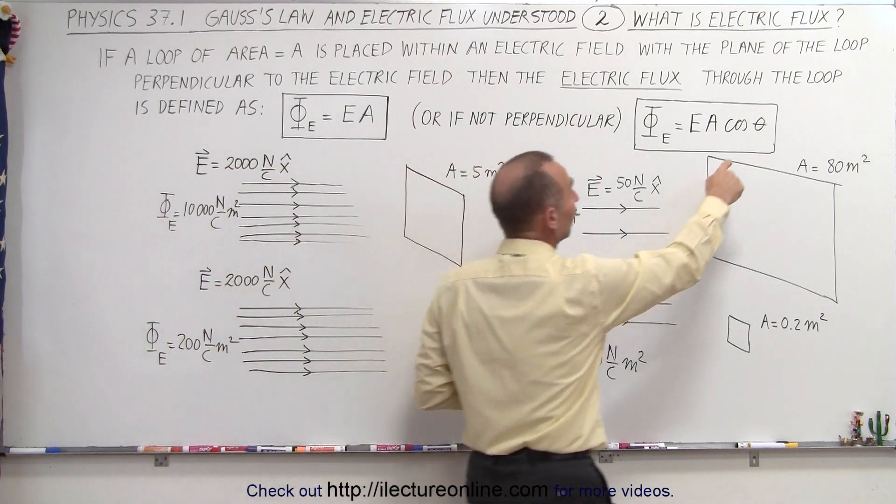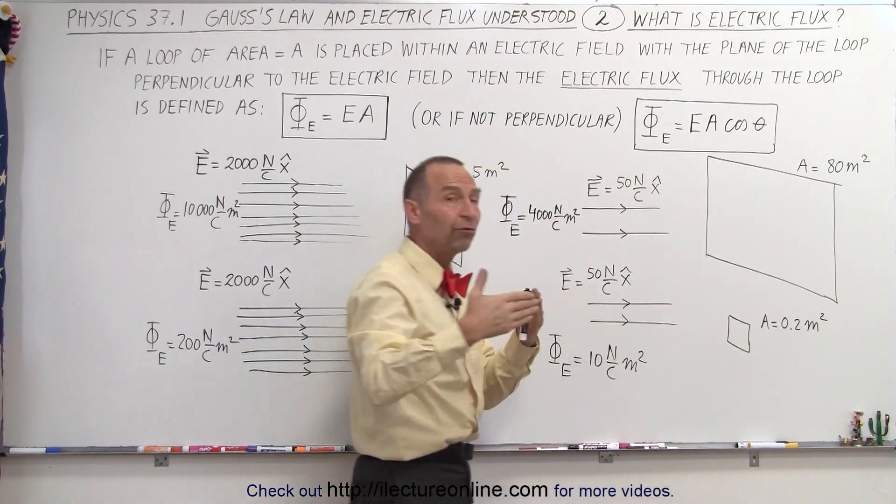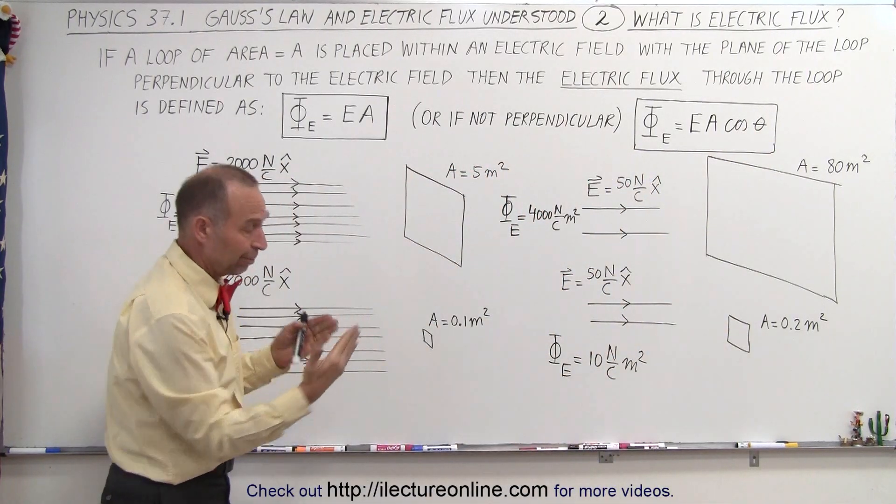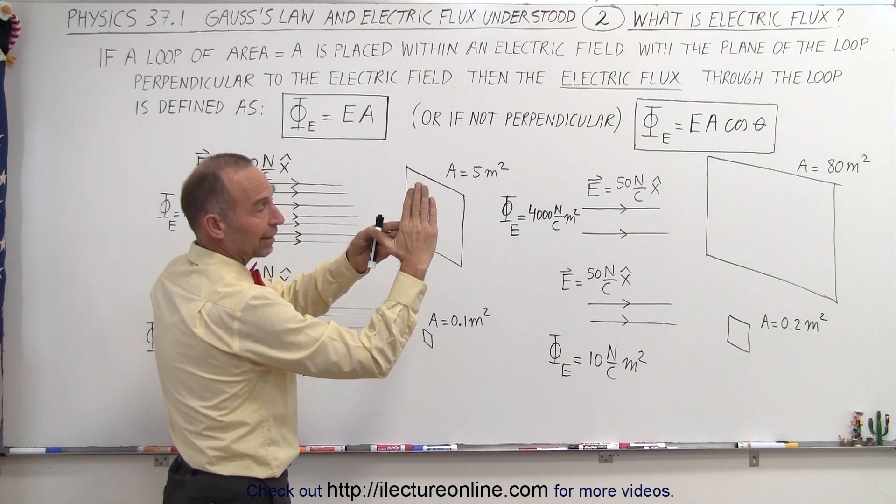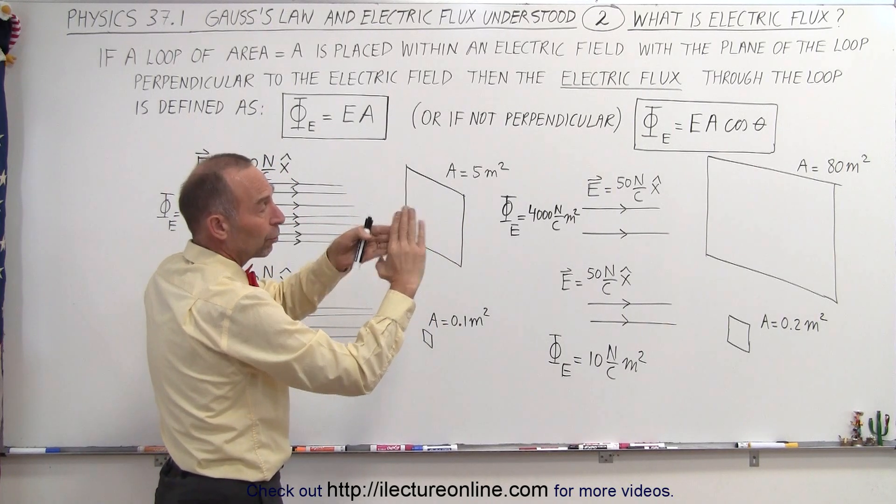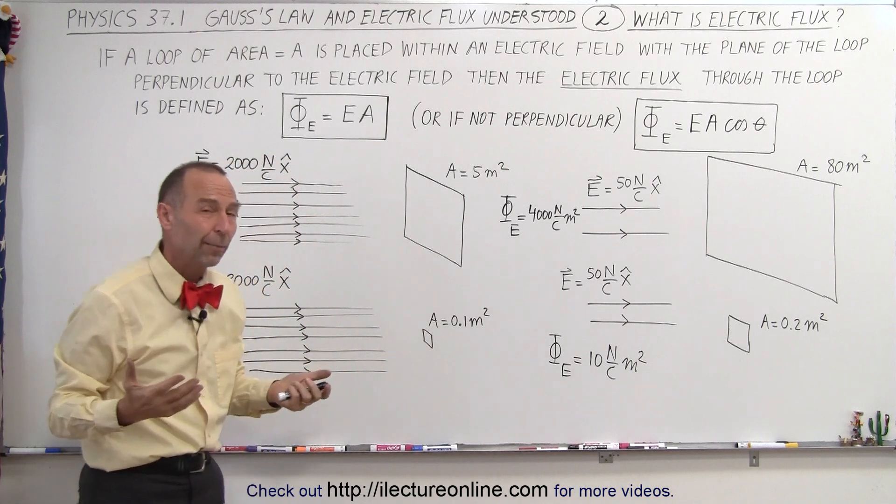Well, then the cosine of 90 degrees would equal 0 and there will be no flux going through the loop, which makes sense because in this way the flux can go through the loop, but when you turn it like this, there's no way any flux can go through the loop and the flux will be 0.